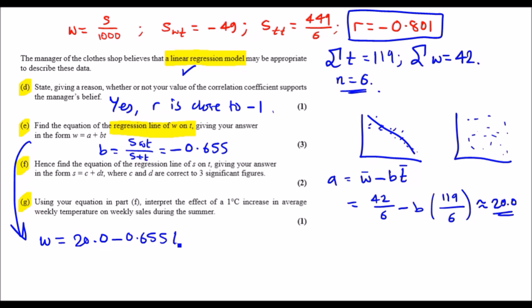Now F is very similar. Hence find the equation of the regression line of S on T, so S on T. Giving your answers in the form S equals C plus DT. So the only difference here is that W is now replaced with S, and we can just figure this out using the relationship of the coding here.